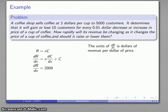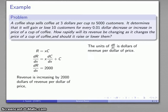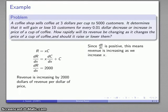And so note that dR/dx, the units of this expression, are revenues measured in dollars. X, price of a cup of coffee, also measured in dollars. So we can read this as having units of dollars of revenue per dollar of price, and that is going to be positive 2000. So we can take that as an increase. So revenue is increasing by 2000 dollars of revenue per dollar of price. And since our revenue is increasing as we increase x, we should probably raise prices. And again this explains Starbucks.